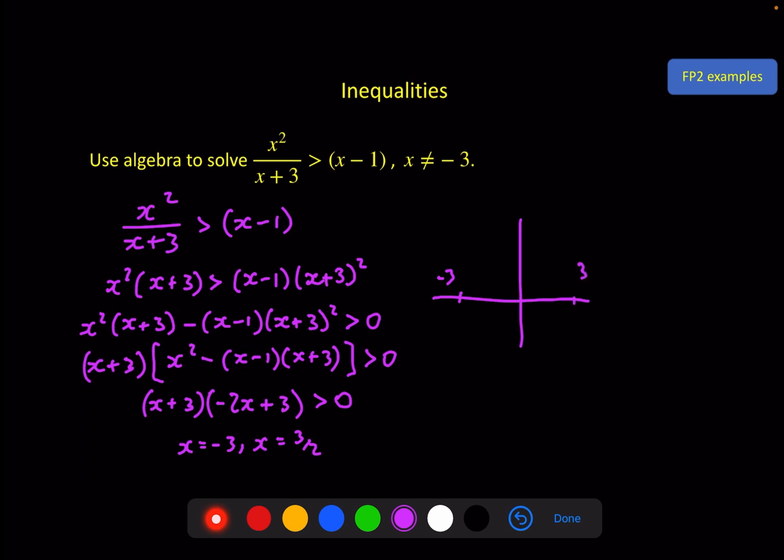-3 there. 3/2 here. And I can see, if I were to expand this out, that that would be a negative quadratic. So it looks like this. And again, we've got three regions. This one, this one, and this one. When is this graph greater than zero? It's greater than zero in this middle region. So my solution is this, to the original inequality.